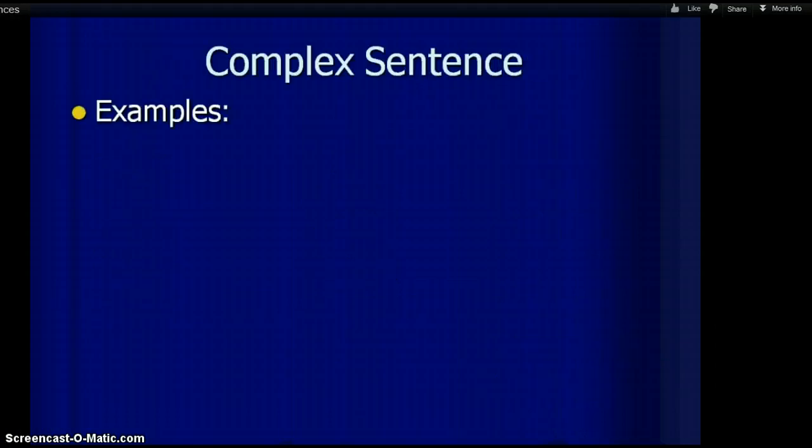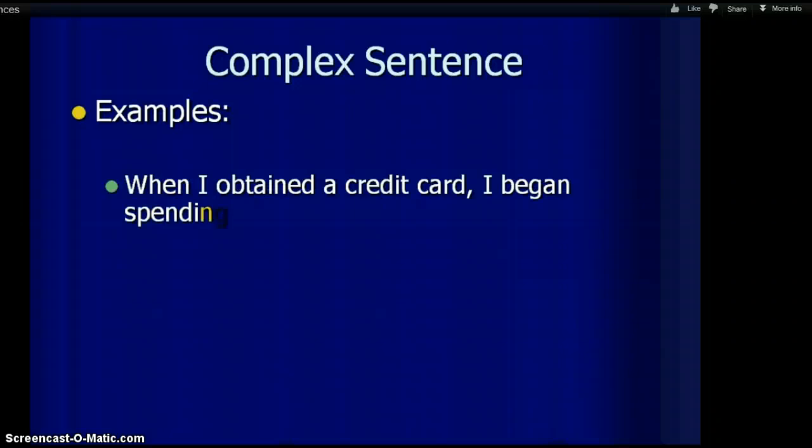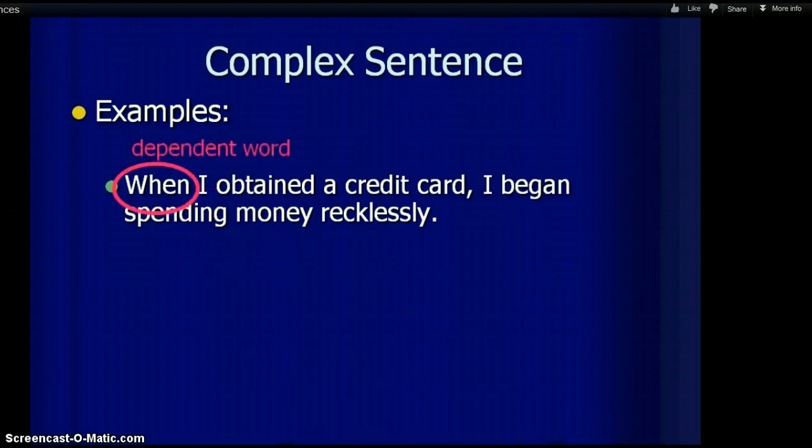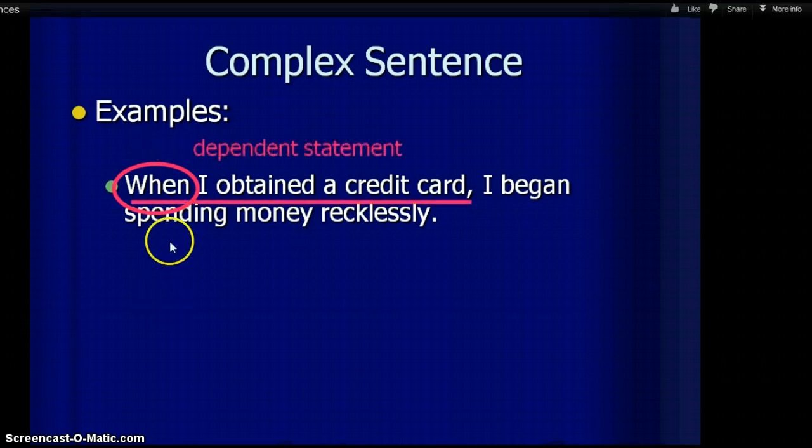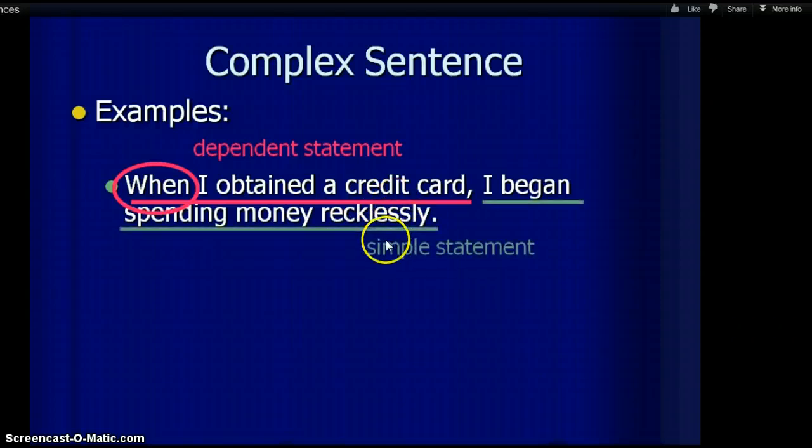Here is an example of a complex sentence. When I obtained a credit card, I began spending money recklessly. There is the dependent word, when. It begins your dependent clause or dependent statement. When I obtained a credit card. The rest of the sentence is your simple sentence or independent clause, and that's what holds the entire sentence together. So the complex sentence is made up of a dependent clause that begins the sentence and an independent clause that ends it.